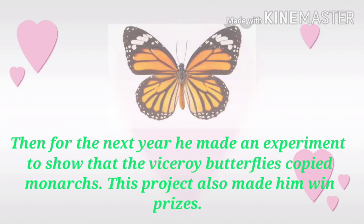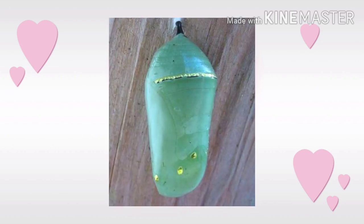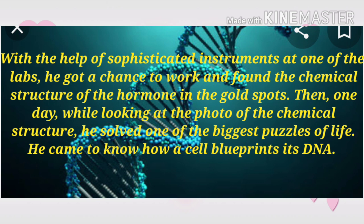Then for the next year, he made an experiment to show that the Viceroy butterfly copies monarchs. This project also made him win prizes. Then he started his research for the purpose of the 12 golden spots on the back of a monarch pupa. Everybody believed that it was just a design, but Dr. Uku Hart thought otherwise. Ebright and other brilliant science students got together and made a device that could show that the gold spots were responsible for releasing a hormone necessary for its growth. With the help of sophisticated instruments at one of the labs, he got a chance to work and found the chemical structure of the hormone in the gold spots.